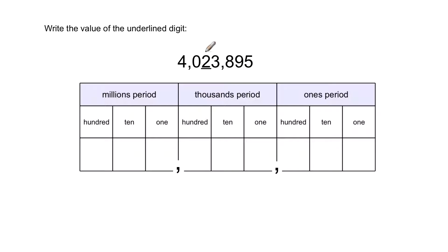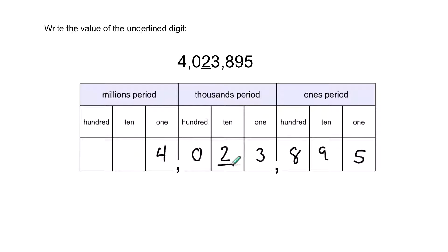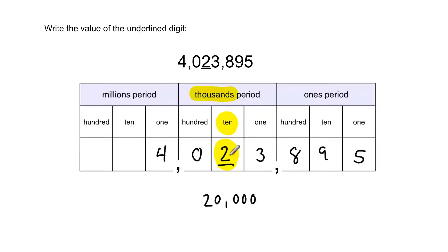Now we have a number with three different periods: ones, thousands, and millions. Let's put that on the place value chart: 0, 2, 3 and so on, then 895. The underlined digit is a 2. It's in the ten thousands place — two ten thousands is twenty thousand, not two thousand. So the value of this digit is 20,000. The digit plus the place it's in will give you the value.